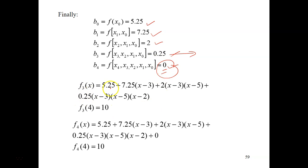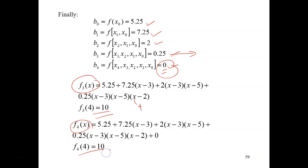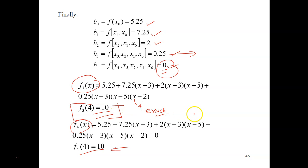If you plug in all values into the third order interpolating polynomial, you get the answer as 10. For the fourth order polynomial, plugging in all values with x equals to 4 also gives the same value of 10. This confirms that it is not necessary to calculate the fourth order polynomial — sticking to the third order interpolating polynomial gives the exact answer.